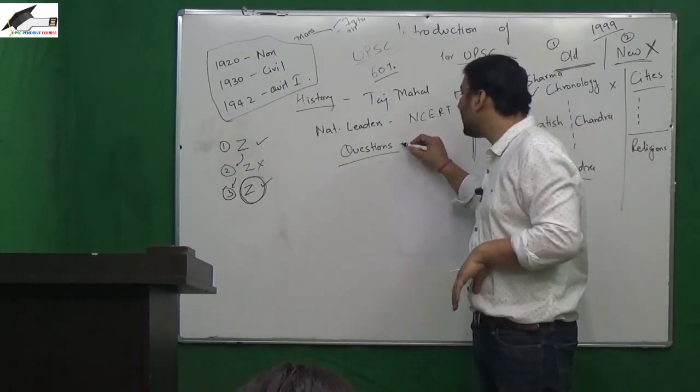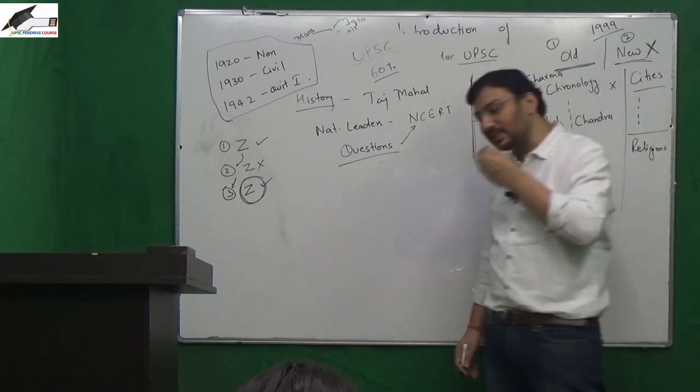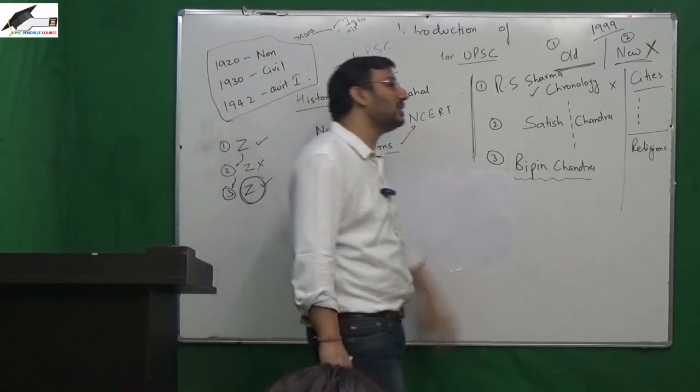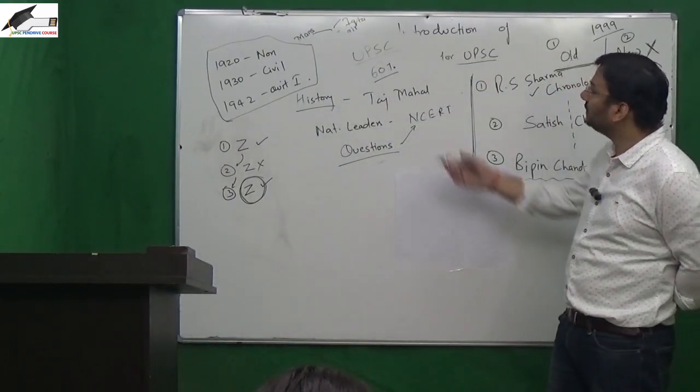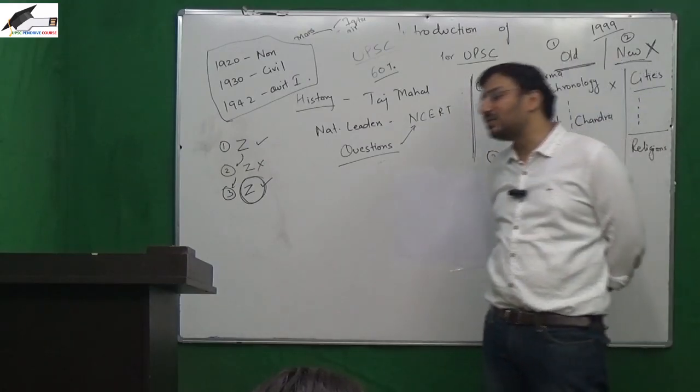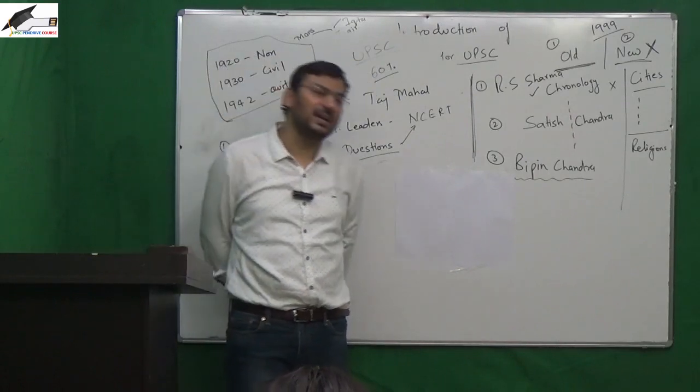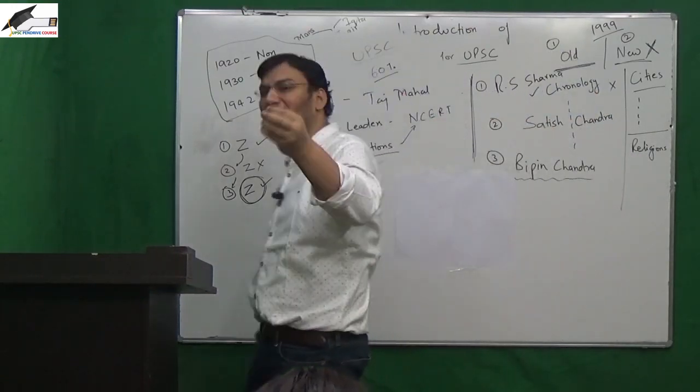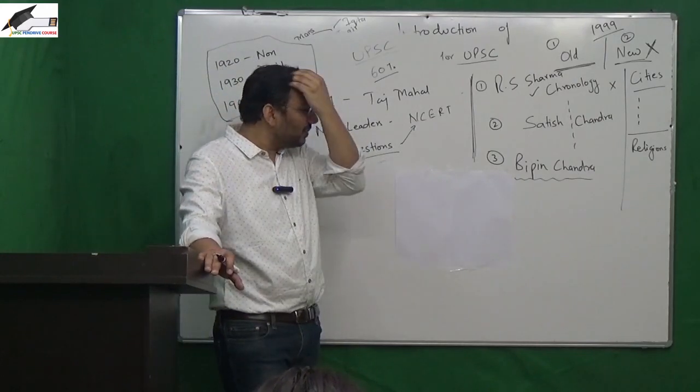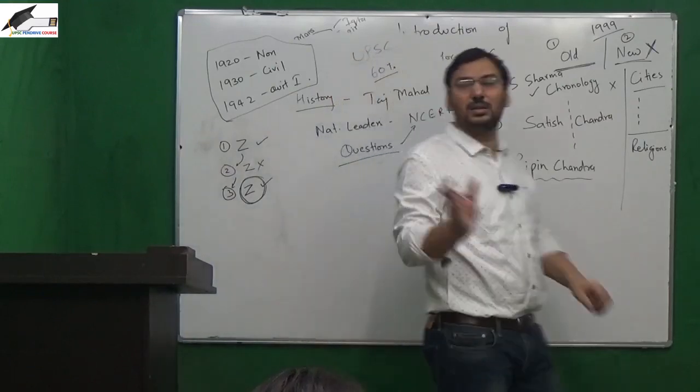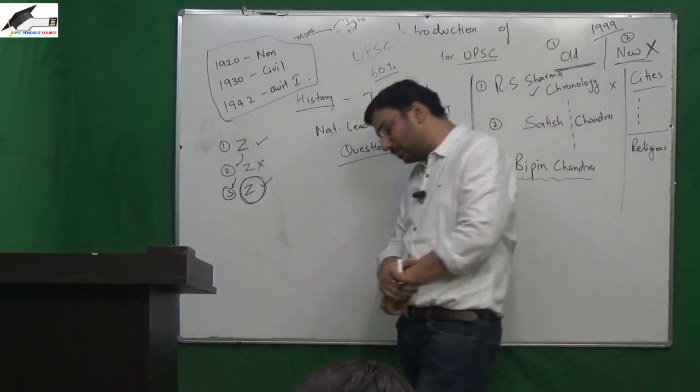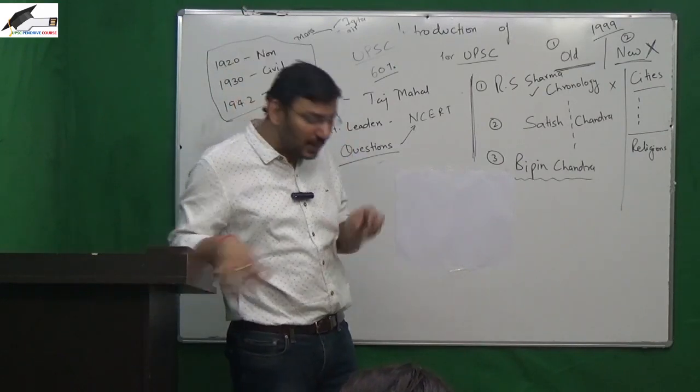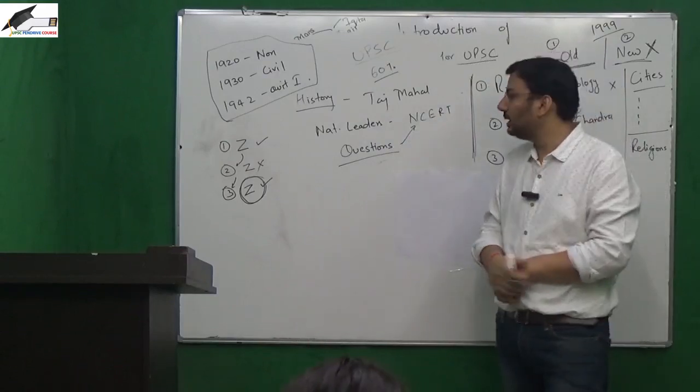I hate saying this that some questions come directly from NCRT, but they do come. Last year they asked zamindars - what was their role in Mughal Empire? Hundreds of books, hundreds of issues. Some said they were landed magnates. During Delhi Sultanate, to curb them Shere Shah Suri issued patta and kabuliyat. But Satish Chandra wrote they were inducted in Mughal bureaucracy. That was the answer UPSC accepted.